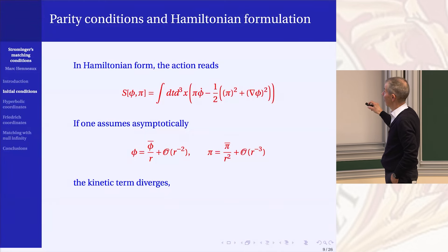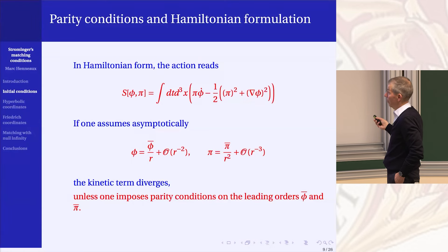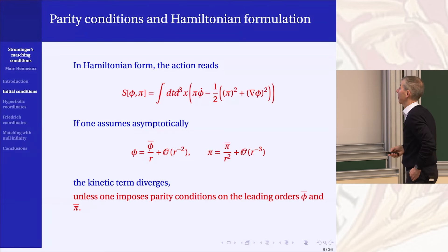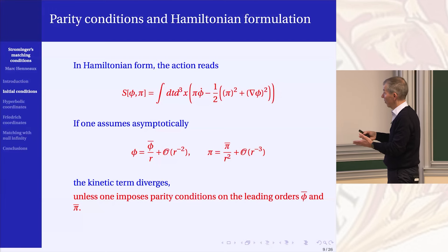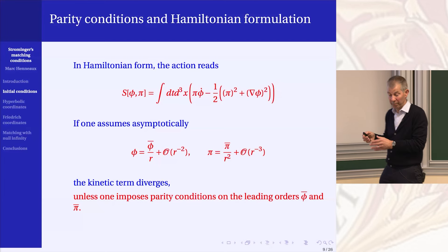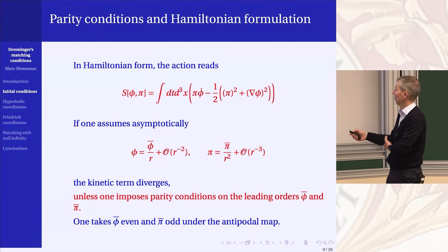If I do that, I will find a logarithmic divergence in the kinetic term: 1/R squared times 1/R gives 1/R cubed, so R squared dR over R cubed gives dR/R — logarithmic divergence — unless I impose some restrictions. I will impose strict parity conditions. Normally I should impose parity conditions up to a twist given by a gauge transformation, but there is no gauge transformation, so zero twist: strict parity conditions. Just as we did for gravity, the q's are even to leading order and pi-bar is odd to leading order. This is preserved by Lorentz transformations.